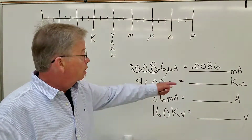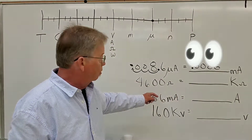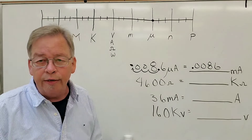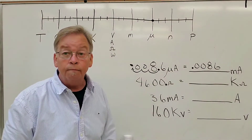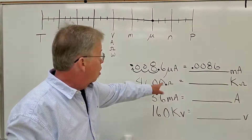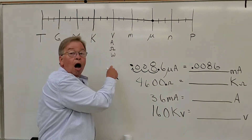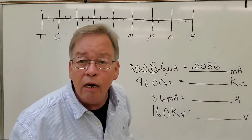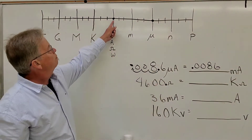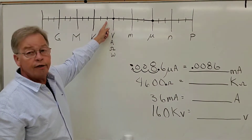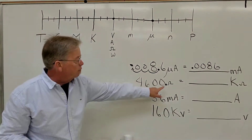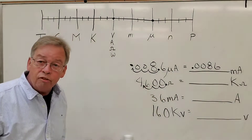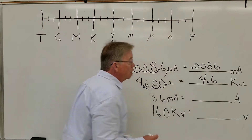Now we're going to convert 4,600 ohms to kilo-ohms. There's no decimal point in that number. Every number that doesn't have a decimal point, we automatically assume that the decimal point is at the very end of the number. That decimal point is sitting on our number line on the regular ohm spot. It's telling me I need to move that decimal point to the kilo spot — that's three places to the left. So my answer becomes 4.6 kilo-ohms.